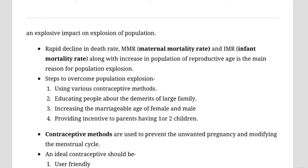Steps to overcome the population explosion include using various contraceptive methods, educating pupils, and increasing the marriageable age. In India the legal marriageable age is 18 for females and 21 for males, and the government is planning to raise it to 21 for both.